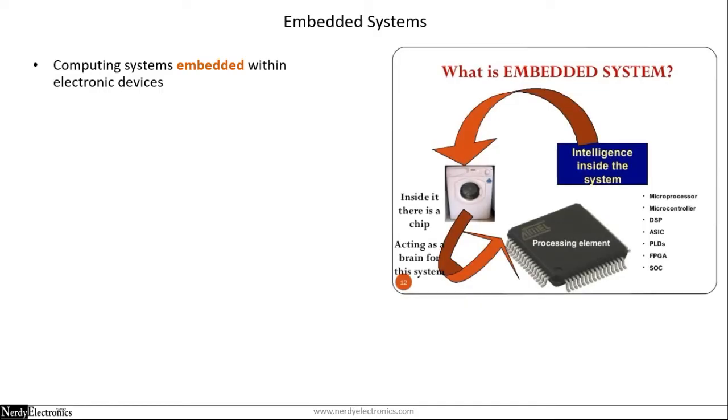Embedded Systems are computing systems which are embedded within electronic devices. Let's take an example of a washing machine. There is a processing element that could be a microcontroller or a microprocessor, DSP, ASIC, PLP, FPGA or SOC. These devices act as the brain of the system in which they are embedded.